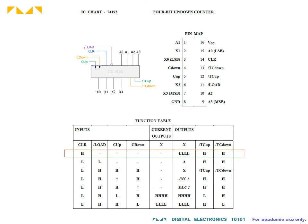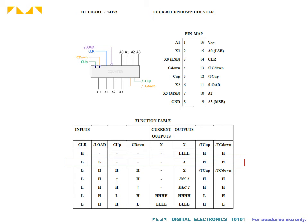This IC has an asynchronous clear that sets all the bits to 0. It also has an active low asynchronous parallel load and can thus be manually preset to any desired state.